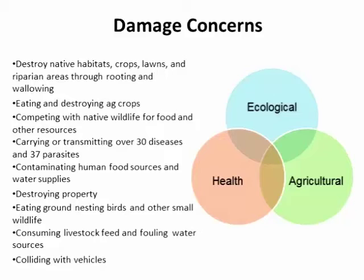Some of the damage concerns we're worried about with pigs: they destroy native habitats, crops, lawns, and riparian areas through rooting and wallowing. They eat and destroy agricultural crops, compete with native wildlife for food and resources, and are known to carry and transmit over 30 diseases. They have parasites, contaminate human food sources and water supplies, destroy property, compete with ground-nesting birds and small wildlife, disturb the forest floor removing food sources and opening areas to invasive plant species. They also consume livestock feed, foul water sources, and cause vehicle collisions.